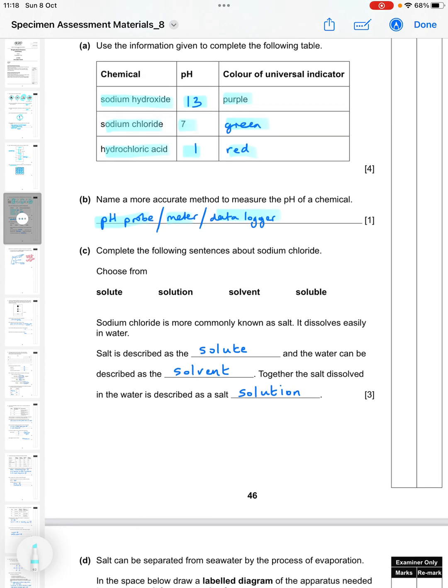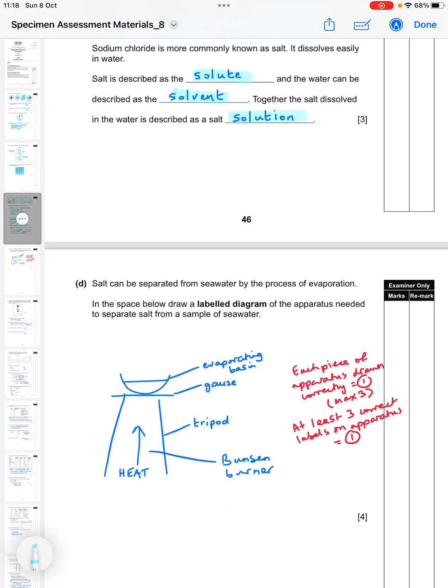Then complete the sentences about sodium chloride. Choose from solute, solution, solvent, and soluble. Sodium chloride is more commonly known as salt, it dissolves easily in water. Salt is described as the solute - that's the part that does the dissolving - and the water can be described as the solvent. Together, the salt in the water is described as a solution. Three marks for that part.